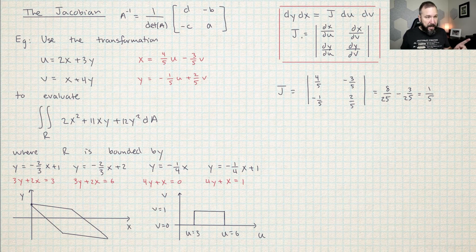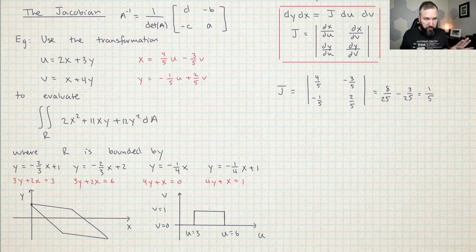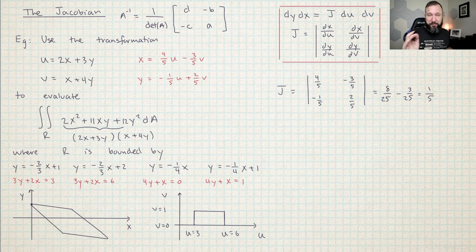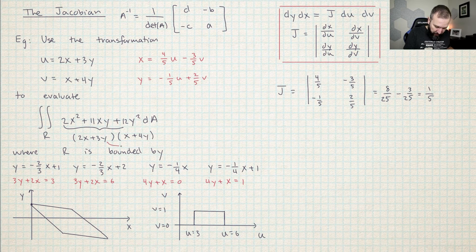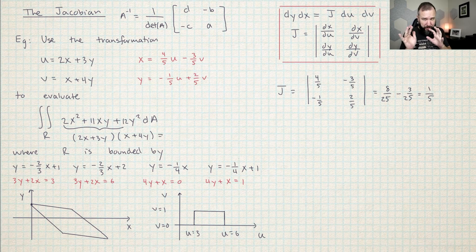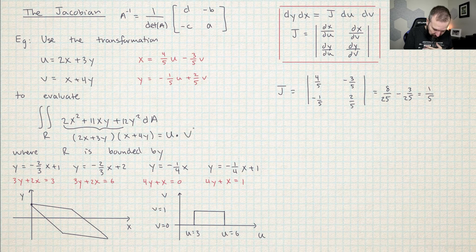We're almost done — all I need to do is work out what this integral is in UV space. Looking at the original integrand, it factors nicely. If I check: two X squared, plus the mixed terms give 8XY plus 3XY which is 11XY, plus three Y times four Y gives 12 Y squared. They've lined up all the pieces so it comes out really nice — this is just U times V. So we've done all the work.